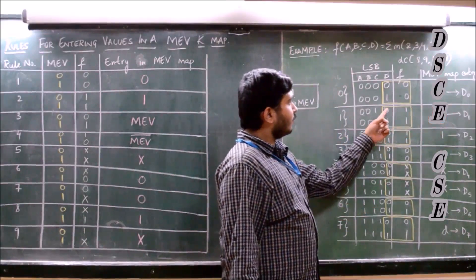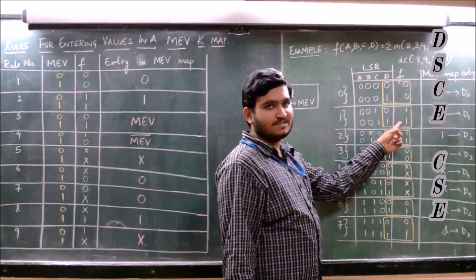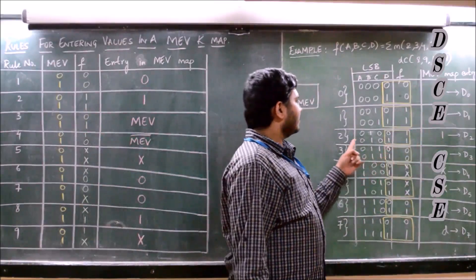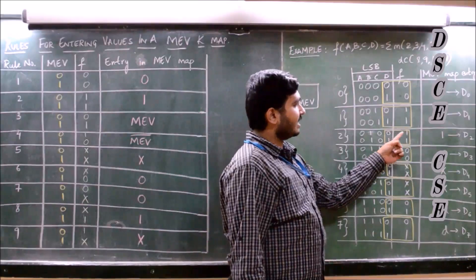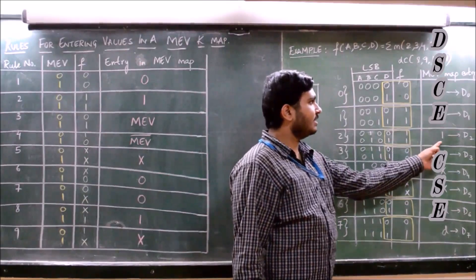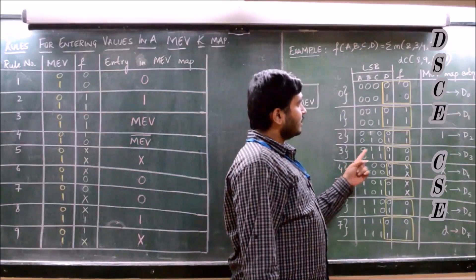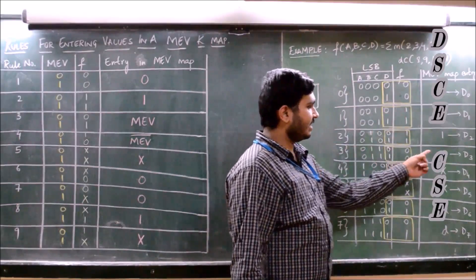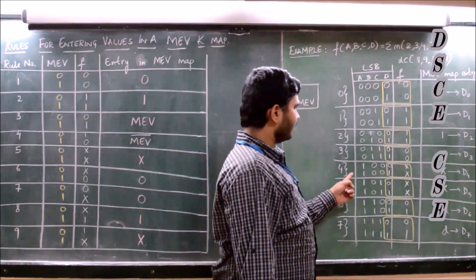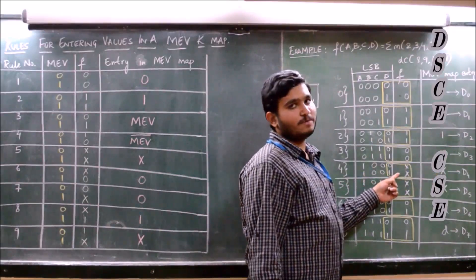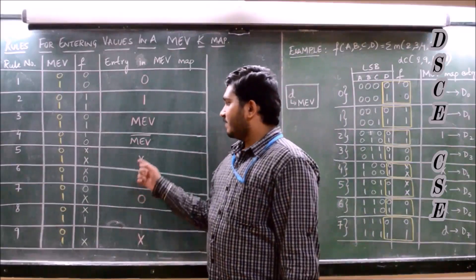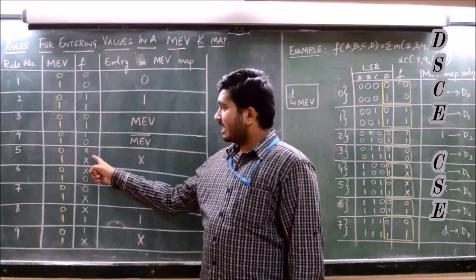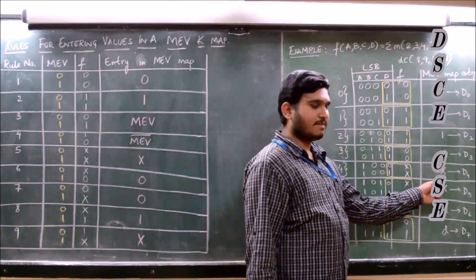For the second condition, for both values of the MEV variable, we have the function output as 1. So from rule 2, 1 has to be entered in the MEV map entry, so we have entered 1. In the third condition, for both values of the MEV variable, we again get 1 as the function output, so we entered 1. In the fourth condition, for both values of the MEV variable, the function output is 0, same as the first condition, so we enter 0. In the fifth condition, for both values of the MEV variable, the function output is a don't-care condition, so we enter don't-care in the map entry.